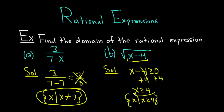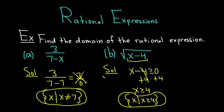So this would be the domain of this rational expression. In the first example, we had an issue because we were dividing by 0, which is a very common issue. In this example, we had an issue because we had a square root — whenever you have a square root, you take whatever's inside and set it greater than or equal to 0. Those are the two most common examples when finding domain.